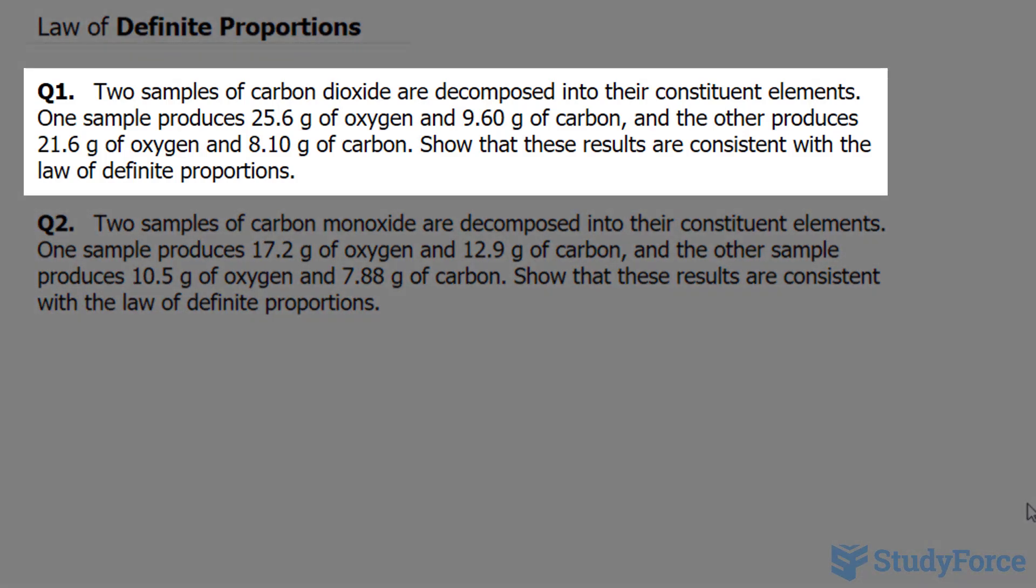Question 1 reads: Two samples of carbon dioxide are decomposed into their constituent elements. One sample produces 25.6 grams of oxygen and 9.60 grams of carbon, and the other produces 21.6 grams of oxygen and 8.10 grams of carbon. Show that these results are consistent with the law of definite proportions.